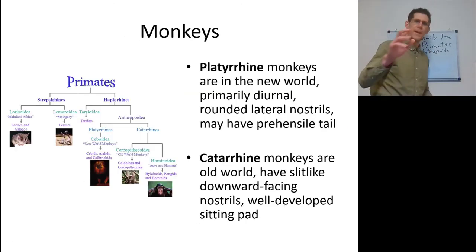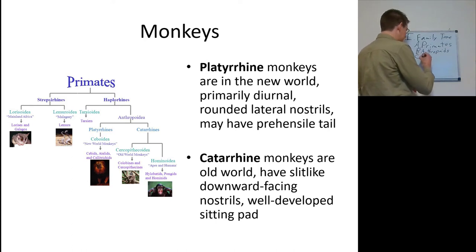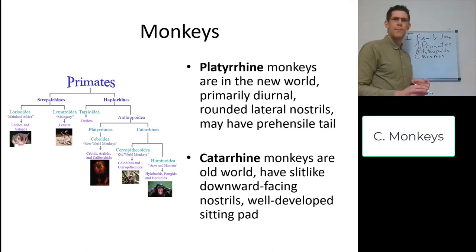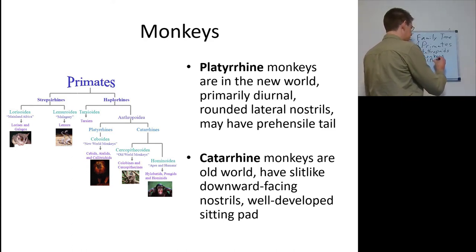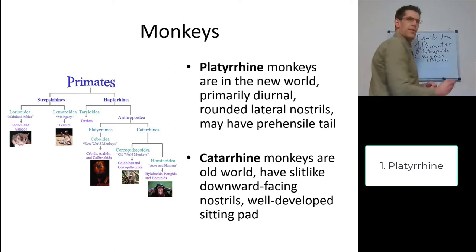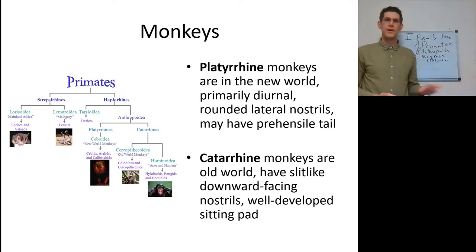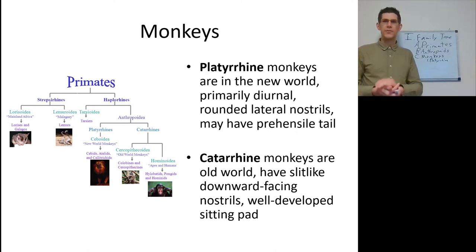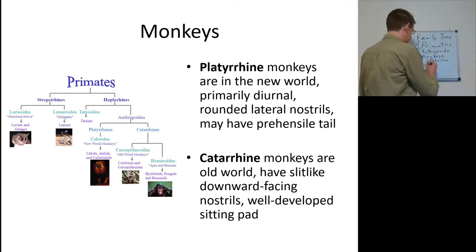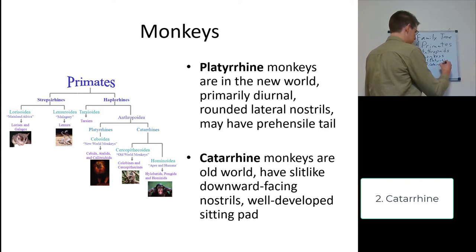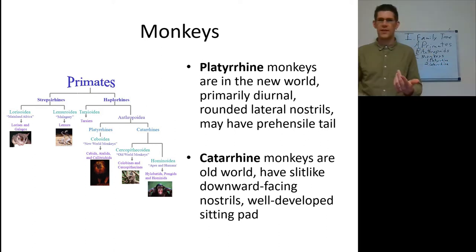We don't consider ourselves to be monkeys because monkeys are a distinct group within the anthropoids. There are two types of monkeys. First are the platyrrhine monkeys — the new world monkeys. Those are your Brazilian monkeys, your colobus monkeys, your howler monkeys. They're primarily diurnal, just like us. They have rounded lateral nostrils on the sides of the nose. They may even have prehensile tails. Catarrhine monkeys, on the other hand, don't have those prehensile tails.